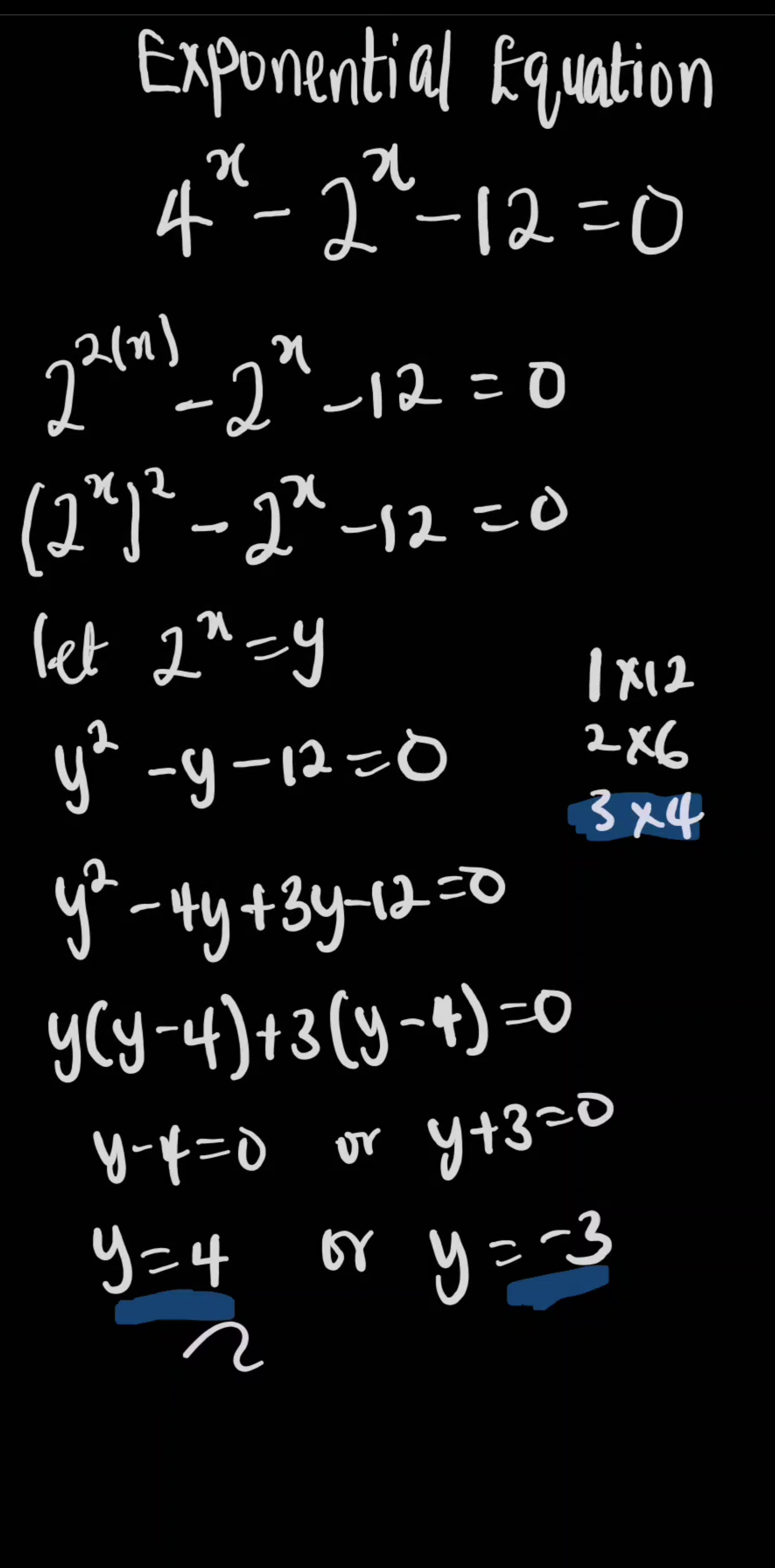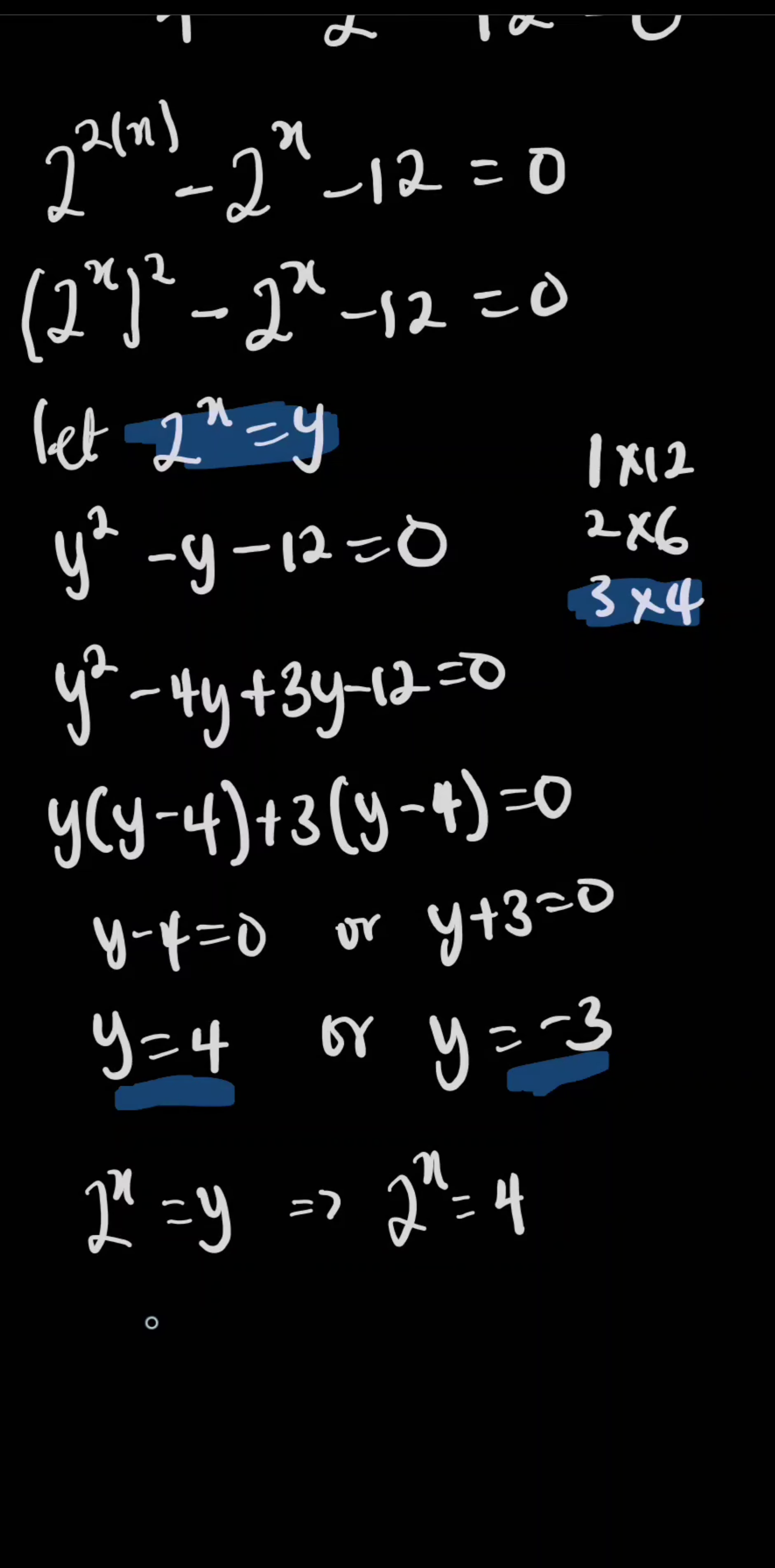Recall from here that we have 2 to the power of x equals y. This implies that 2 to the power of x equals 4, so we have 2 to the power of x equals 2 to the power of 2. By equality of base in the rule of indices, therefore x equals 2.